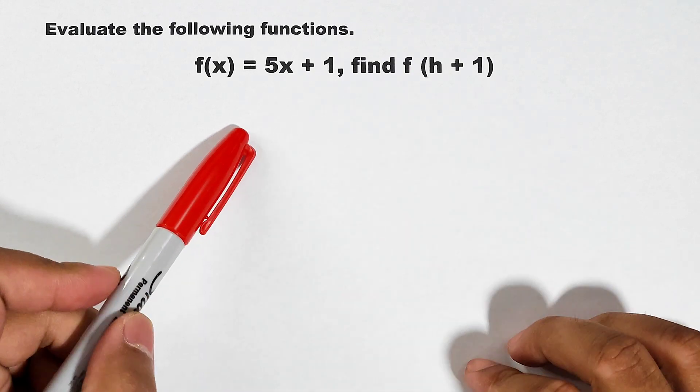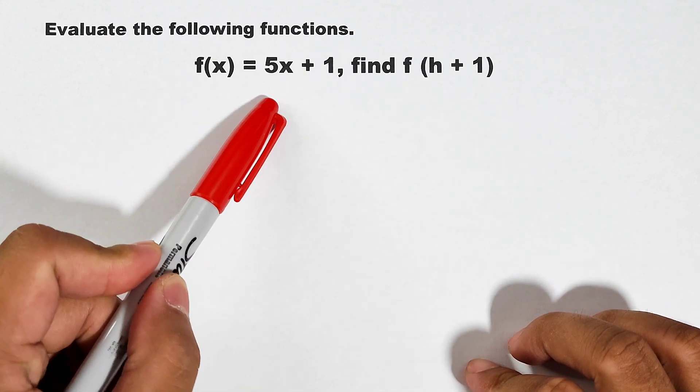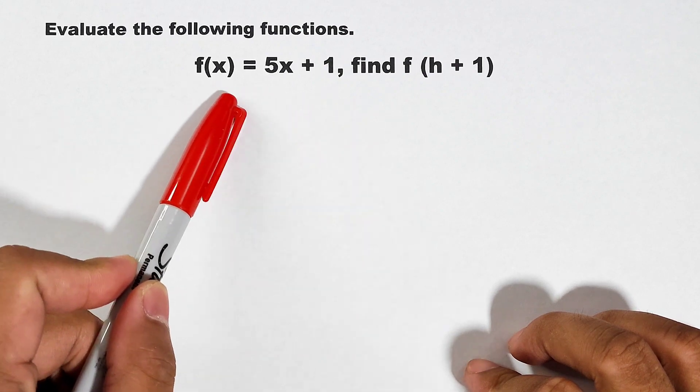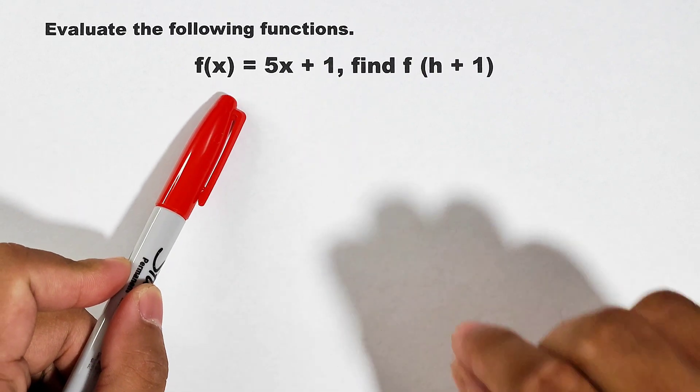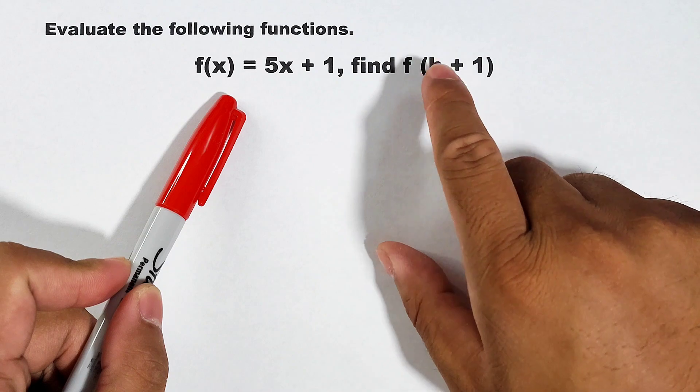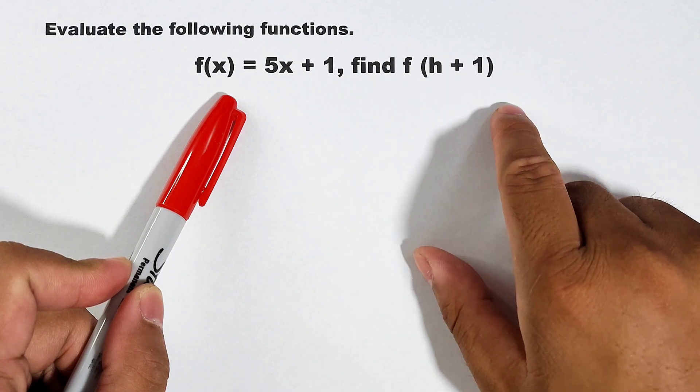Let's start with the first one. f of x is equal to 5x plus 1. This is our given function f. And we are asked to find f of h plus 1.